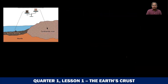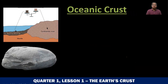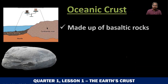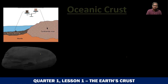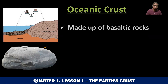On the other hand, oceanic crust — ito naman yung crust which is made up of basaltic rocks. Here you can see a sample of a basaltic rock. A basaltic rock, as you can see, has less to no crystal formations. Hindi tulad ng granitic rocks na maraming kristal — medyo rough yung granitic rocks. But here, basaltic rocks are smoother.